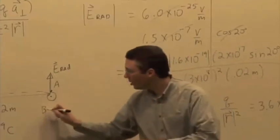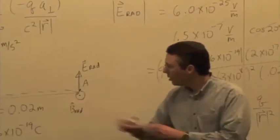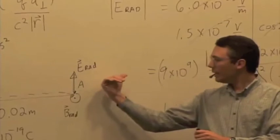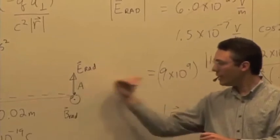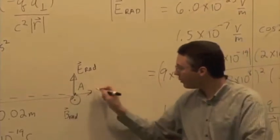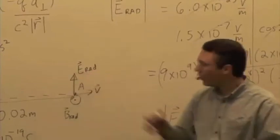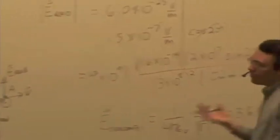E cross B, direction of E cross the direction of B gives us the direction of propagation. We know that it's coming from the charge, right? So we know the direction of B, and how do we get the magnitude of B?